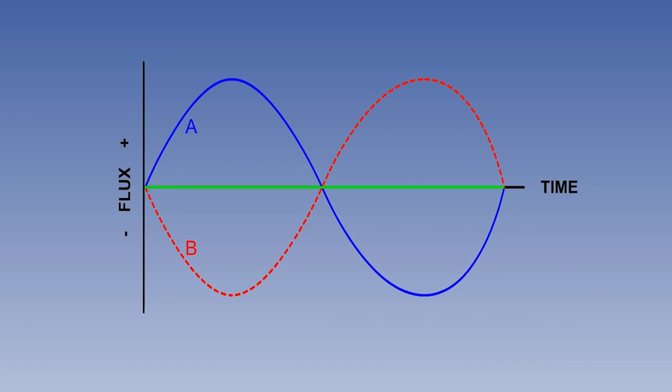If we add the components A and B together, the resultant flux, which is shown here by a green line, is therefore zero, and so no current is induced in the pick-off coil.